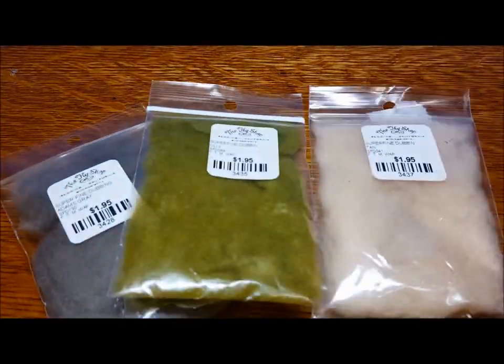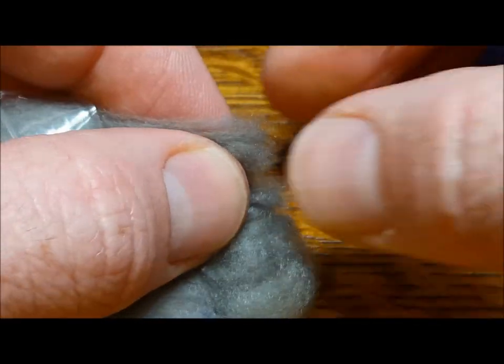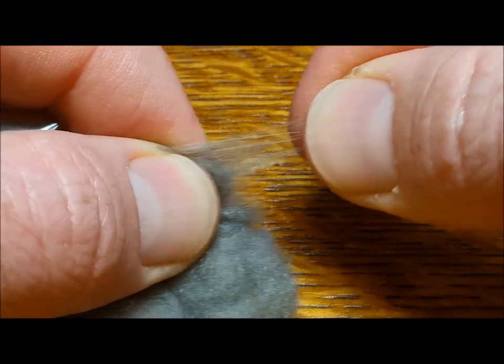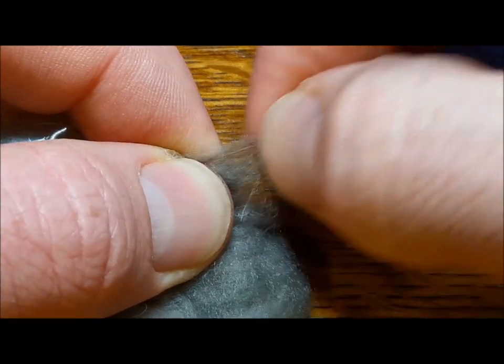Superfine dubbing is often used in the creation of dry flies. When selecting the fibers, the process is similar. Hold the clump and gently and delicately pluck some sparse fibers from the edge.